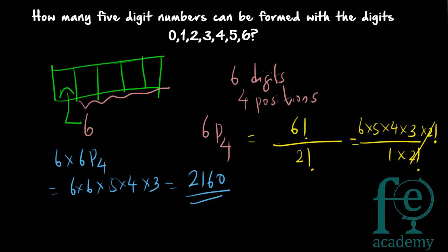So 2160 numbers will be possible. Now let us consider the second case where repetition of digits is allowed. Here also the 10,000th place must be considered separately because 0 cannot go there, so there are 6 ways to arrange the 10,000th place. For the remaining 4 positions, since repetition is allowed, any of the 7 digits can go to each place.